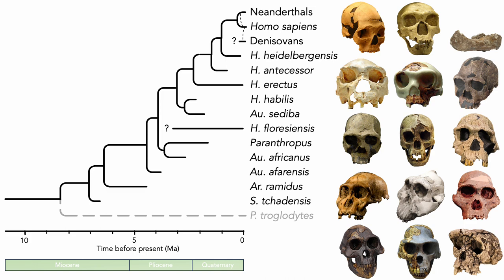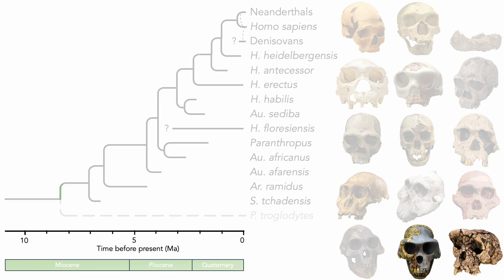The hominin and chimpanzee lineages diverged roughly 7 million years ago, and two of the earliest hominin species were Sahelanthropus tchadensis, which lived around the time of this divergence, and Ardipithecus ramidus, which lived about 4.4 million years ago.